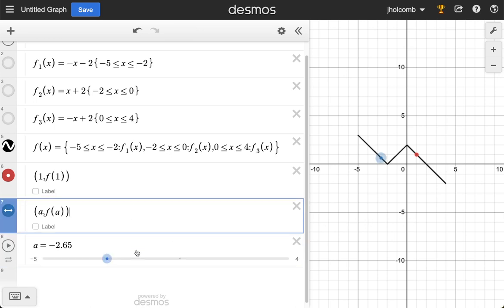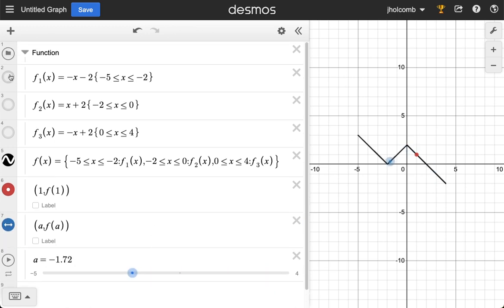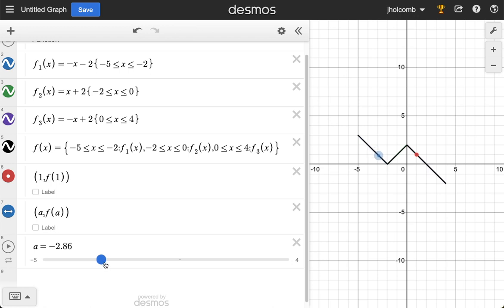So that's it, friends. What I hope you can do - you're going to go back and practice this - is that you can make individual functions that are restricted, you can combine those into a piecewise function, you can put a point on that function, and you can put a generalized point using a slider on that function.